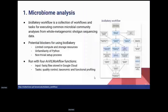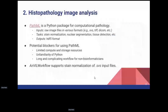The first example is microbiome analysis using the bioBakery workflow — a collection of workflows for executing common microbiome community analyses from whole-metagenomics shotgun sequencing data. Potential blockers include computing and storage resources, the fact that bioBakery is written in Python, and a non-trivial setup process involving multiple software and databases. With AnVIL workflow, users can apply this workflow on their own input FASTQ files stored in a Google Cloud bucket and get quality control, taxonomic, and functional profiling outputs.